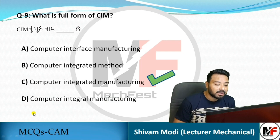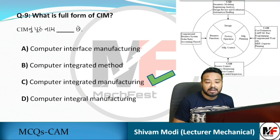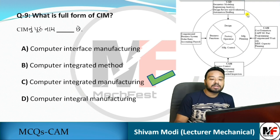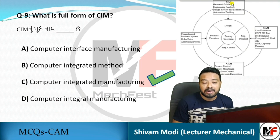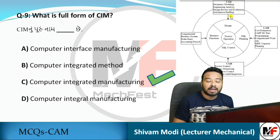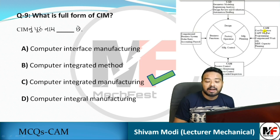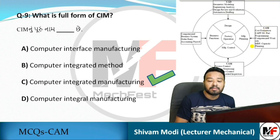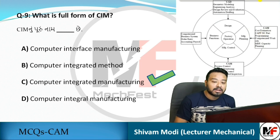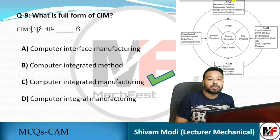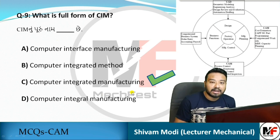What is the full form of CIM? The answer is C — Computer Integrated Manufacturing. Looking at the CIM block diagram: CAD (Computer Added Design) is used for designing using software. CAM (Computer Added Manufacturing) includes CNC and DNC machines for manufacturing. CAPP (Computer Added Process Planning) and CAE (Computer Added Engineering) are all integrated together — this is called the CIM model.